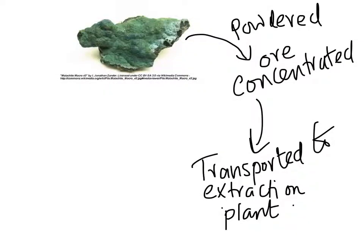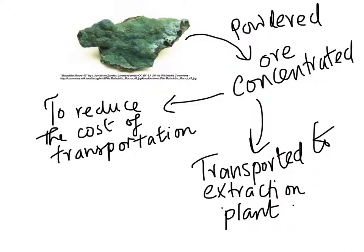Before extraction, the ore is first powdered and then concentrated — impurities such as rocky and waste substances are removed at or near the extraction site before being transported to the extraction plant where the main chemical reaction takes place. This concentration process reduces transportation costs because less material needs to be moved, requiring fewer trucks and less fuel, which also benefits the environment by producing fewer polluting gases such as carbon dioxide.